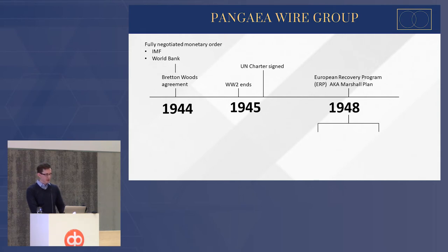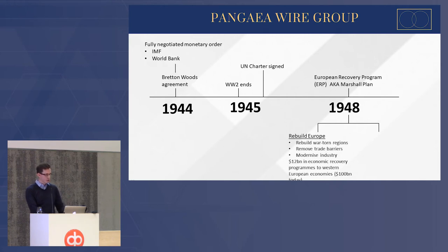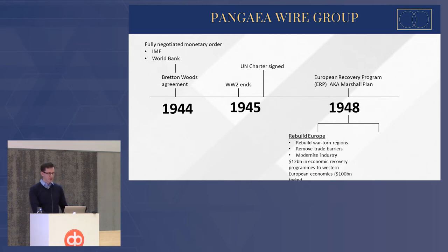In terms of the Marshall Plan, they had two main aims. The first was to rebuild Europe: to physically rebuild the war-torn regions, to remove trade barriers, and to modernize industry. They injected $12 billion worth of economic recovery resources, which equates to around $100 billion in today's money. The second major thing was to stop the spread of communism.